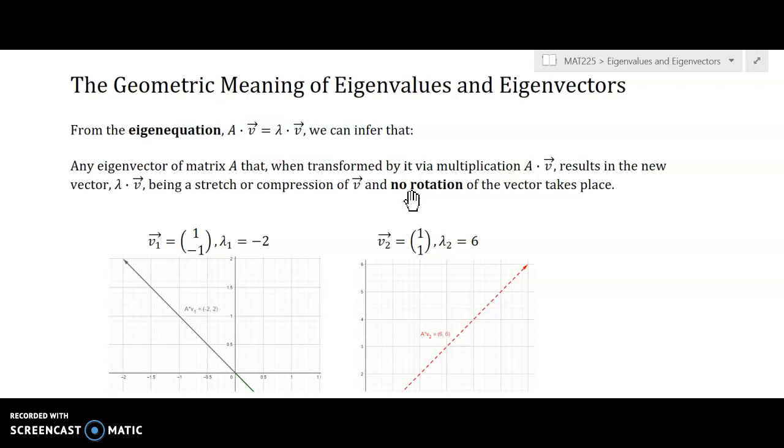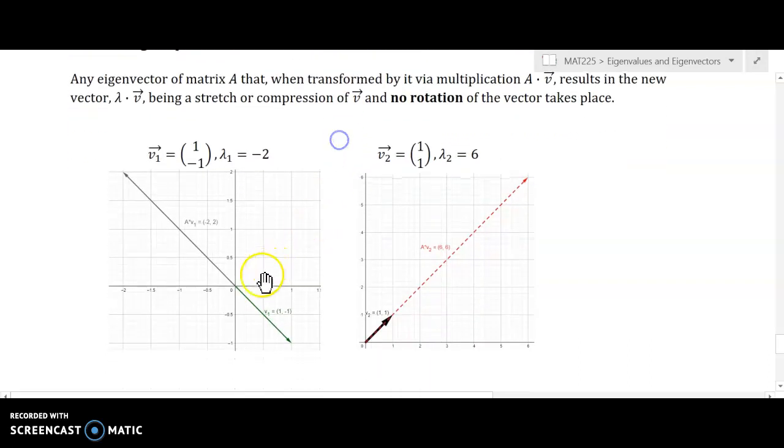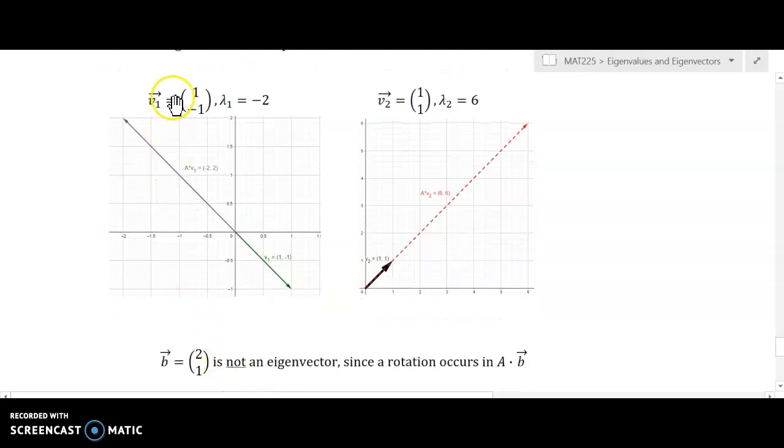results in the new vector, which is going to be lambda v, being a stretch or compression of v. So if you input v into this transformation, what you get out is a scalar multiple of that vector. So if we plugged in, so geometrically, the [1, -1] vector, that was actually what we called v2. But we don't really need to concern ourselves too much with that. The subscript is pretty arbitrary. It doesn't really matter which eigenvalue you call lambda 1, which you call lambda 2, as long as they go with the correct eigenvector.